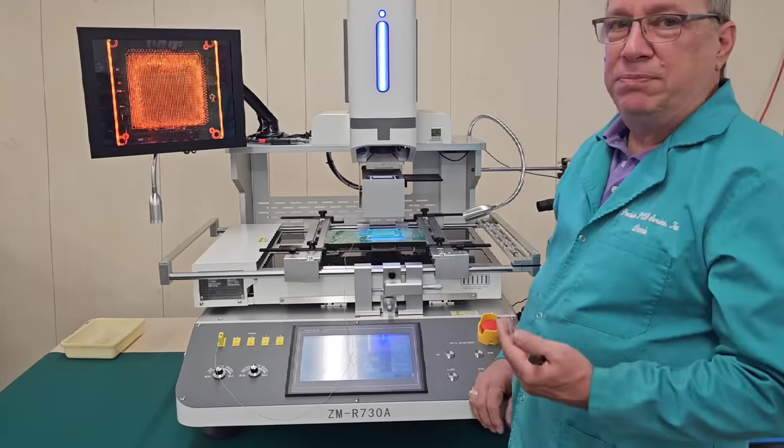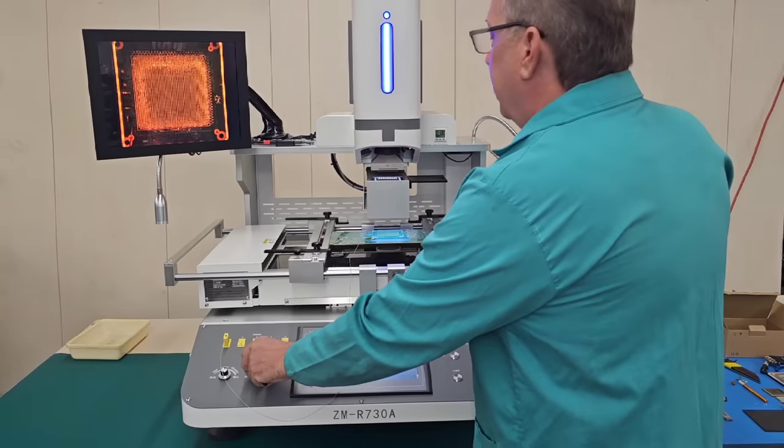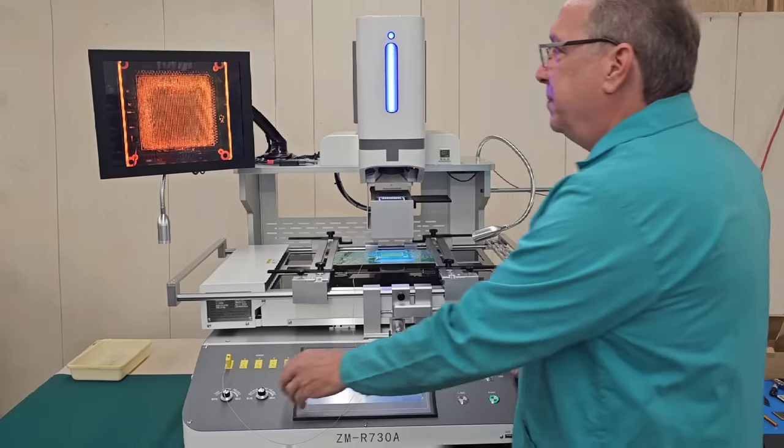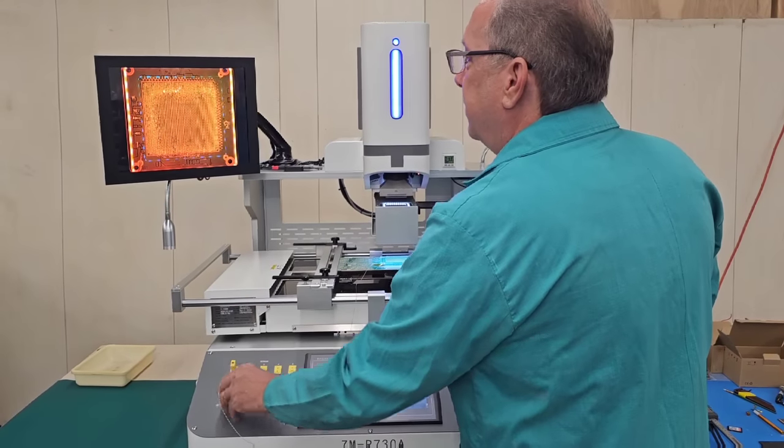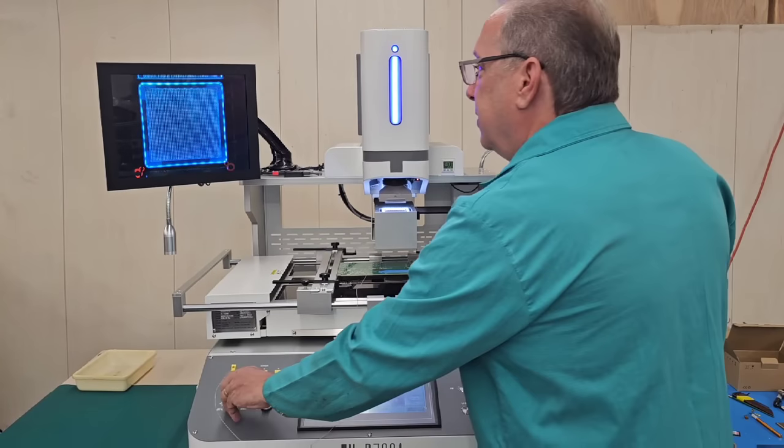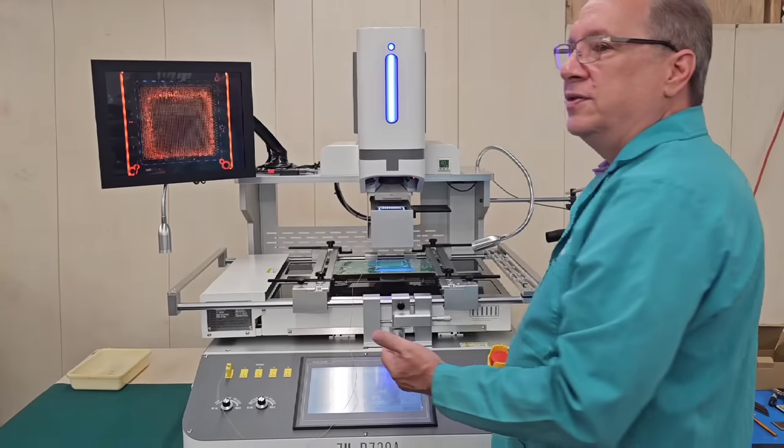So now we have our split vision camera comes on. And what this is going to do is we'll look at the PCB pads and the BGA balls and we'll line them up. We can adjust our lighting. The blue is for the solder balls. The gold is for the circuit board.